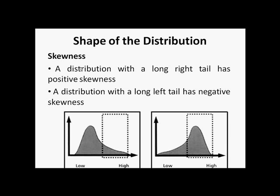Data can be negatively skewed or positively skewed. If a distribution has more data points concentrated to the right of its mean, then we say that distribution has a long right tail — this is called positive skewness, or we say the data is positively skewed.